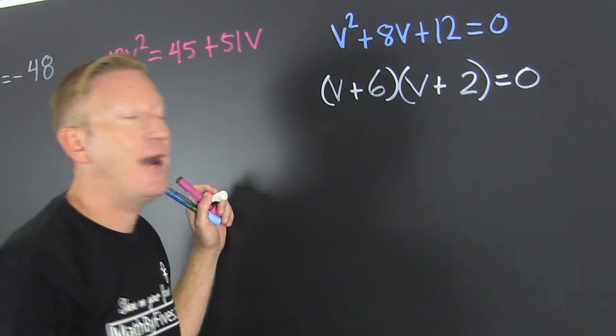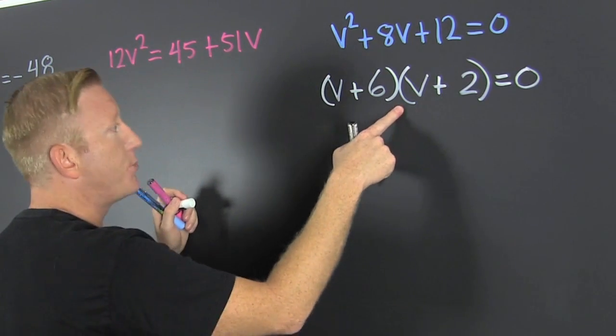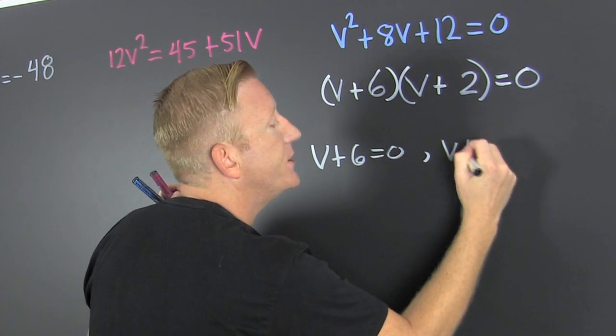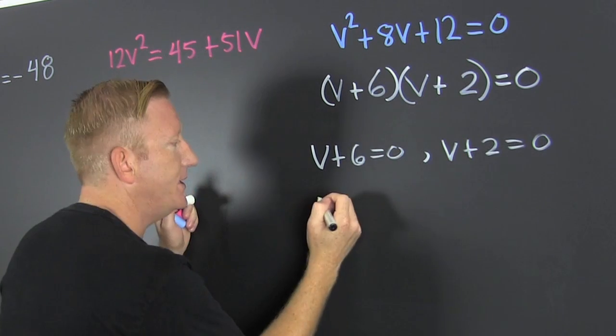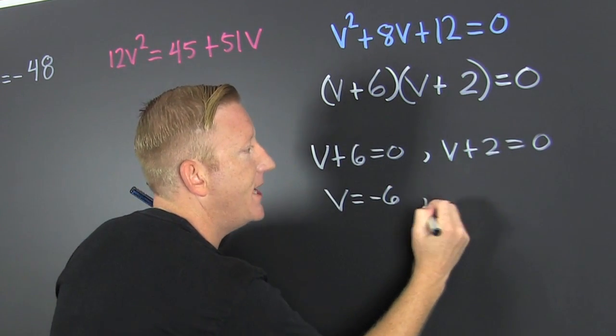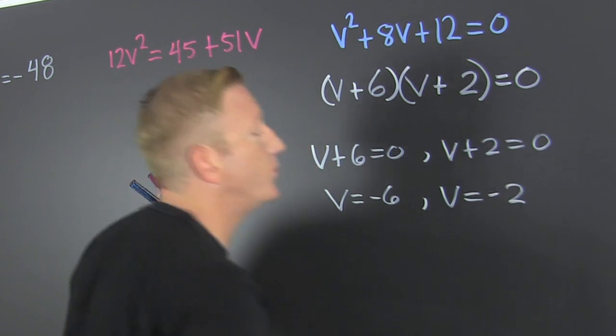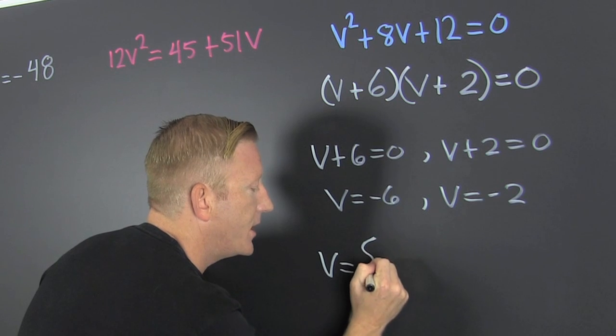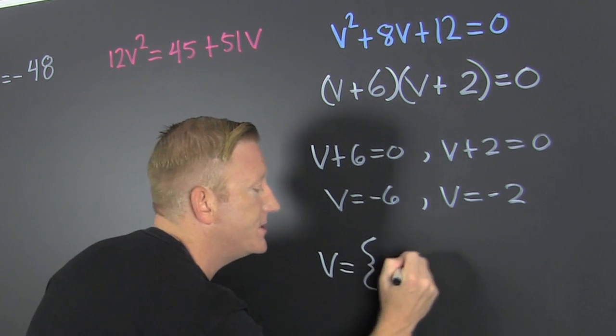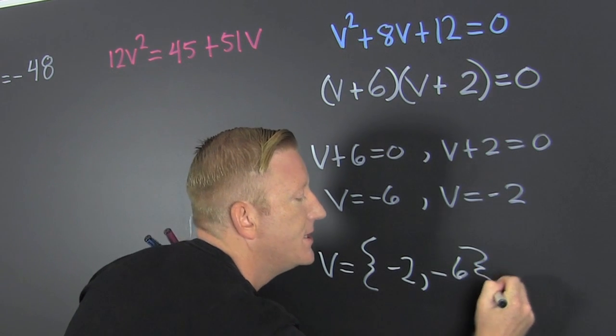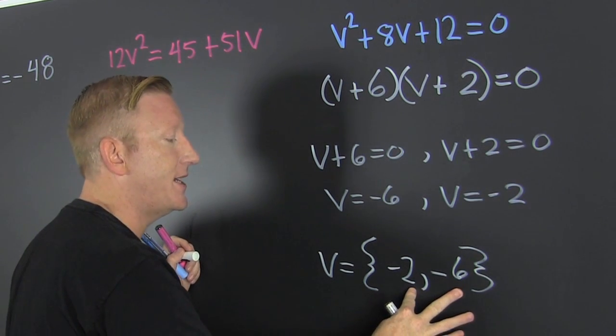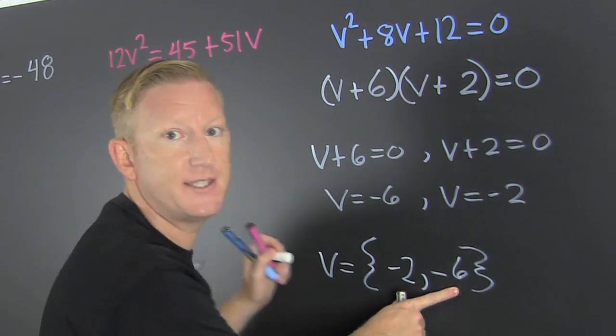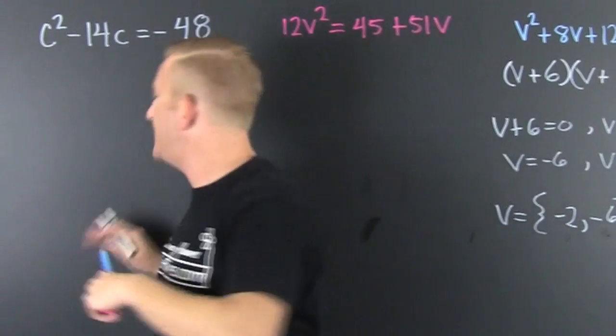The signs are the same and they're both positive. Factoring complete. Now we use our zero factor property that says v plus 6 is equal to zero and if it's not zero then v plus 2 must be. So now we see that our v gonna be a minus 6 and v gonna be a minus 2. So now we write it in a nice pretty package, so then v gonna be v equals, in curly braces, minus 2 and minus 6. Does it matter the order that I put them in that set? No.